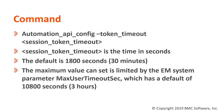The syntax of the command is as follows: automation_api_config space hyphen token_timeout, filled with the Session Token Timeout value.